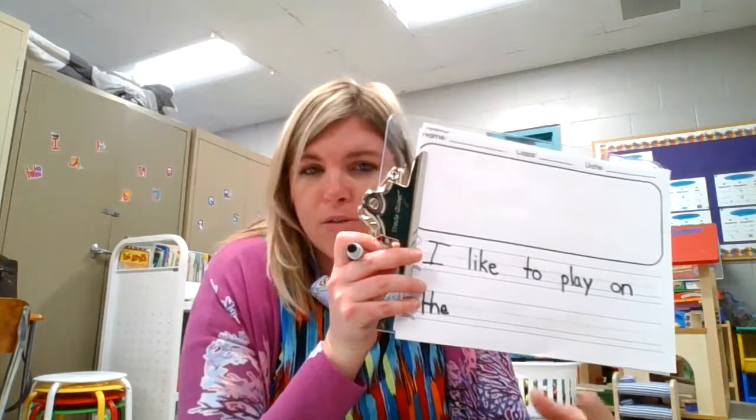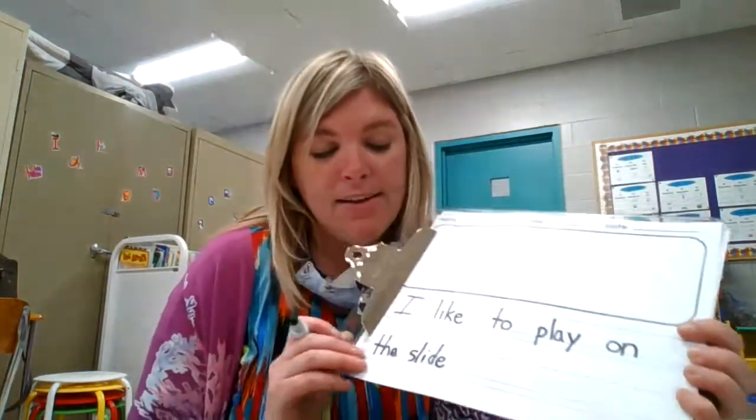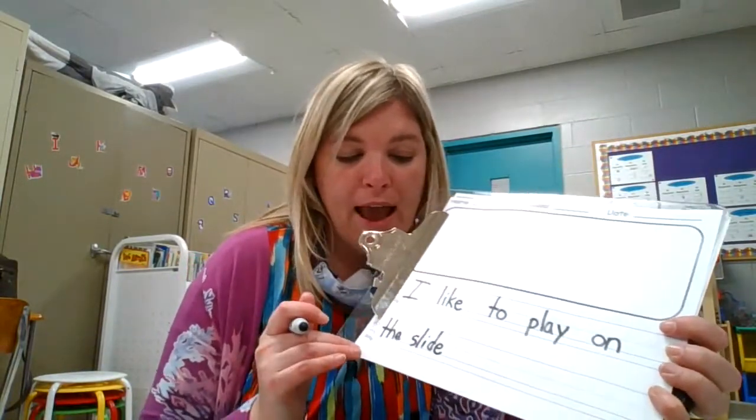For example: 'I like to play on the monkey bars' or 'I like to play on the slide.' I'm going to write 'slide' — make sure you tap out your word at home. 'I like to play on the slide.' Then put a space and write the word 'at.' Let's tap out 'at' — that's two sounds, so we need an A and a T. Then another meatball space and write the word 'the' again.